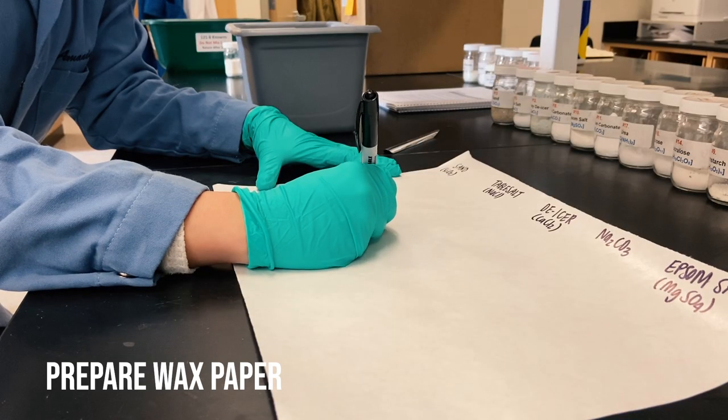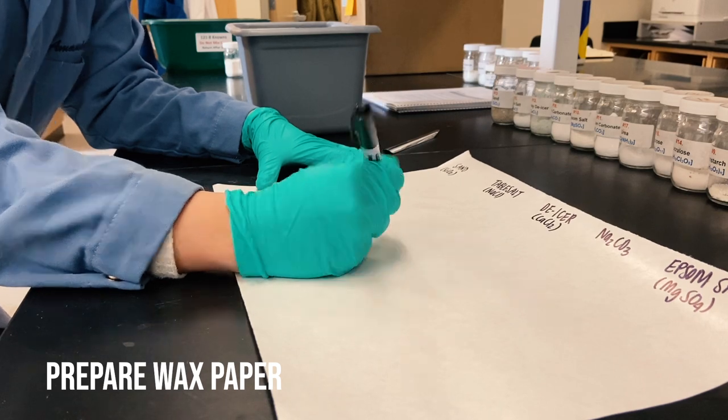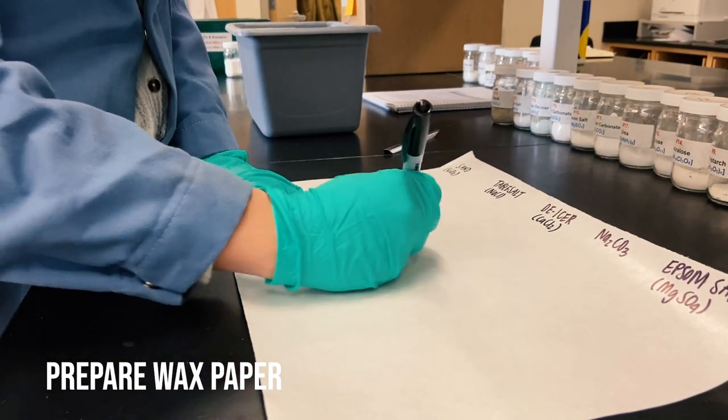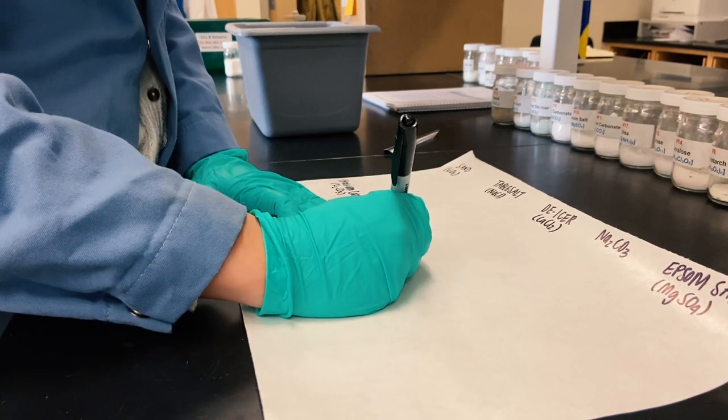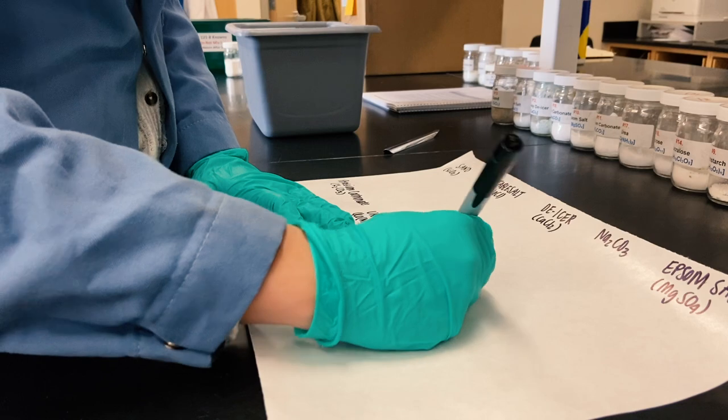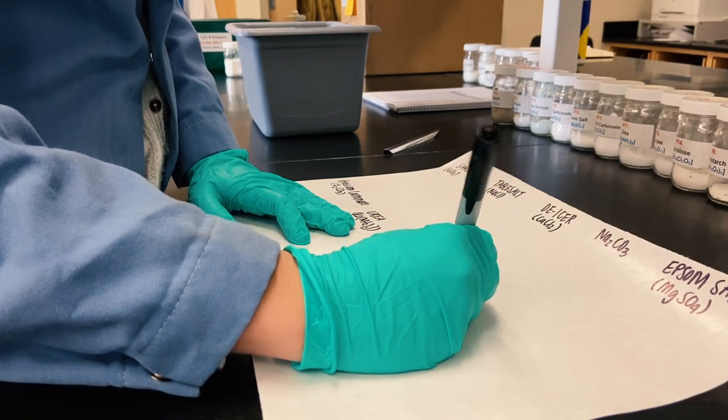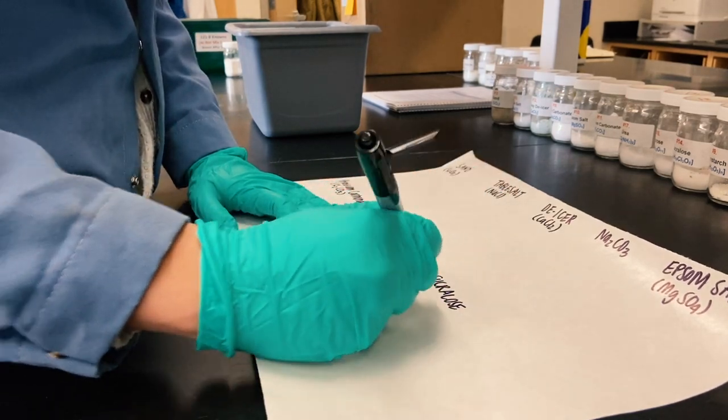So while the diaper soaks, I'm going to prepare a sheet of wax paper. The wax paper is what I'm going to be doing the experiment on. I'm going to scoop the polymer out onto the wax paper into little piles and sprinkle different compounds on them.